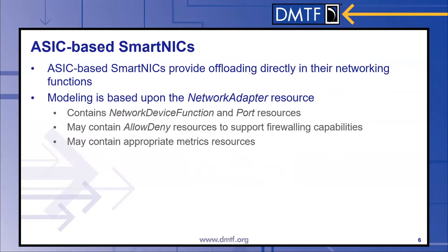ASIC-based SmartNICs are the class where offloading is directly embedded in networking functions, leaving very little flexibility for the user to control the types of offloading done. This type of SmartNIC is primarily dependent on the network adapter resource and its subordinate resources. The key things to look for in this model are network device function resources, port resources, allow-deny resources to support firewalling capabilities, and metrics resources to report statistics about how the SmartNIC is behaving. This is very much in line with what exists for traditional NICs today.